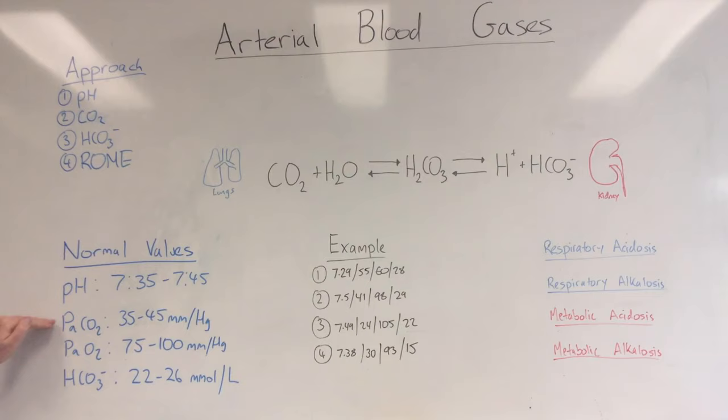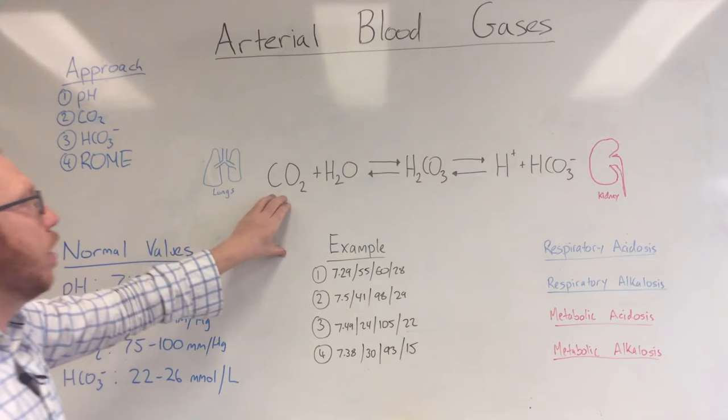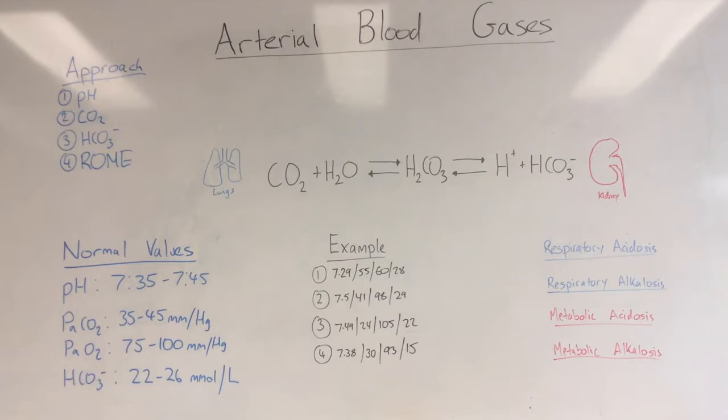Any state where carbon dioxide is out of range in your blood gases is a respiratory cause, because your lungs regulate your CO2 levels. If you've got high carbon dioxide — above 45 — because carbon dioxide in your blood with water is an acid, it would actually make the pH go down.